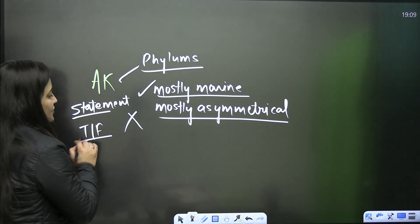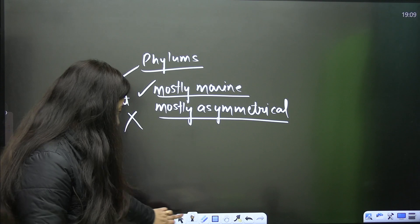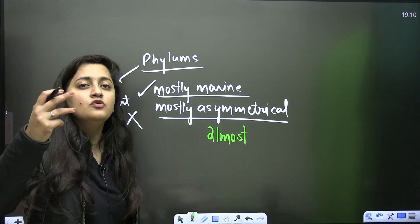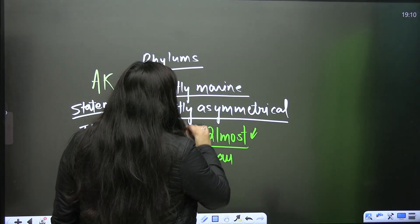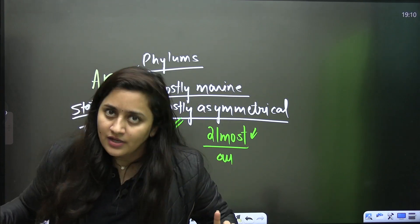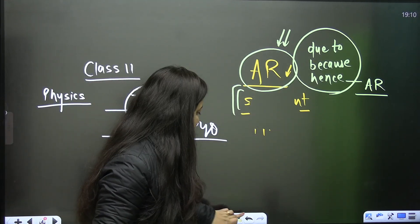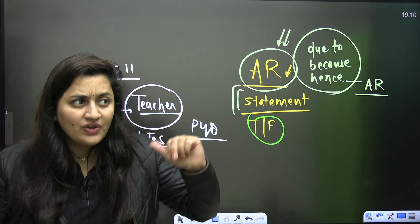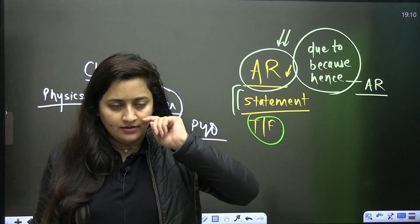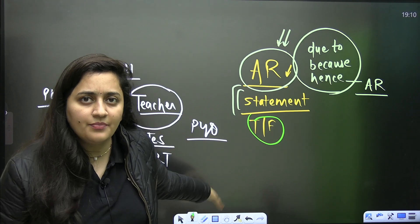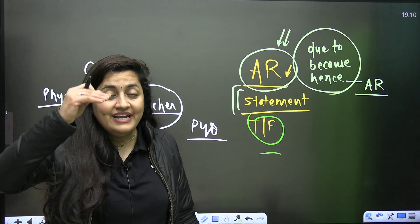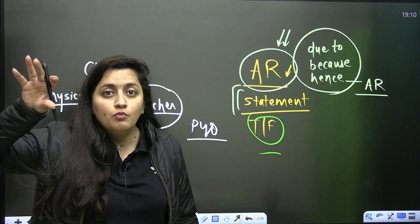Such points are important for statement-based questions as well as true-false questions. Wherever in NCERT you read words like 'almost,' 'all,' or 'mostly,' always make sure you highlight such things. For true-false questions, the paper-setter generally changes the statements — like the 'mostly asymmetrical vs. all asymmetrical' example. Make sure you do not miss such points where words like 'almost,' 'all,' or 'mostly' are given. This is something very important.